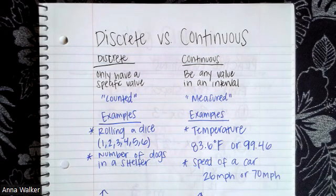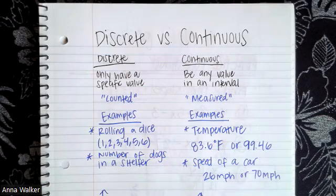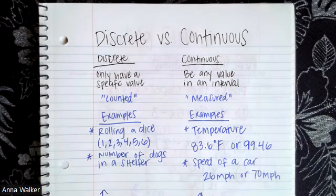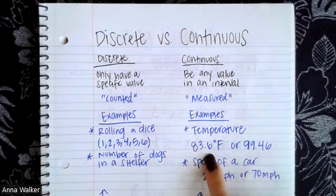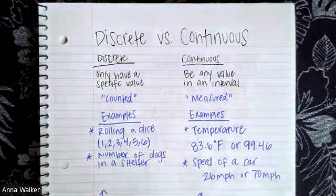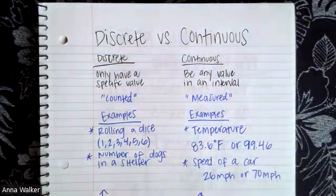Same with the speed of a car — if we were measuring the speed of a car as it travels between two cities, that is going to vary. It's data that can be measured throughout the entire car ride. It could be exactly 26 miles per hour, 70 miles per hour, or 21.32 miles per hour. It's data that can be measured and is continuous — values can be expressed as decimals or fractions, versus things that are just counted and have a specific number.